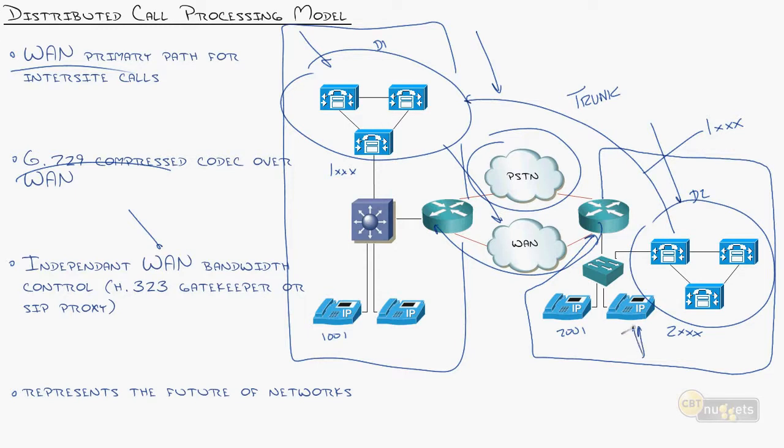Previously on that centralized model where you had the phones over here being managed by one set of call managers, this call manager could track that WAN bandwidth because it was in control of these phones. But since these guys no longer control these phones, you have to have some kind of independent WAN bandwidth source. It could be the routers, there's some basic settings you could do. You can also set up something known as an H.323 gatekeeper or a SIP proxy, same kind of goal.